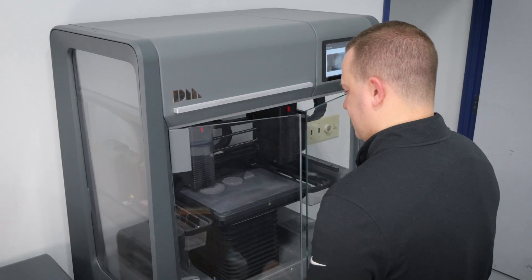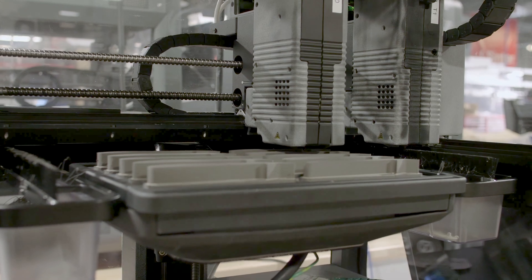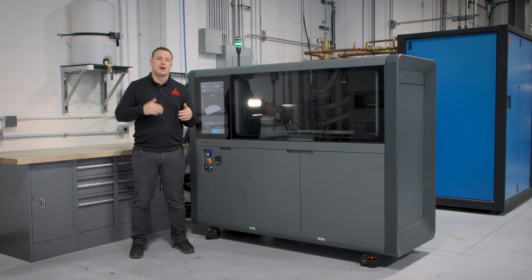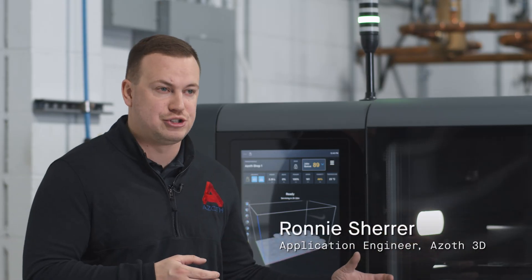We first started printing metal with the Desktop Metal Studio system and this delivered great parts to our customers. We were able to fill our TOMO model but we then needed to reach volumes that were higher than what we could achieve. That's why we moved to the Desktop Metal Shop system.